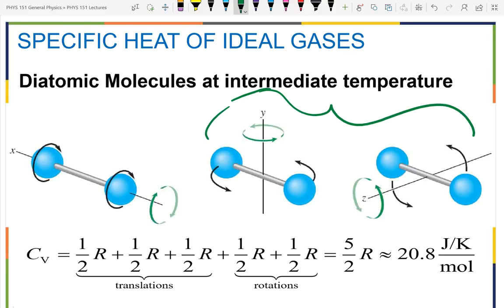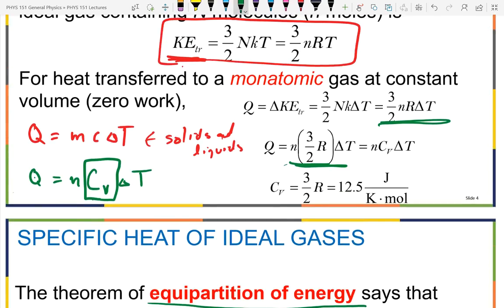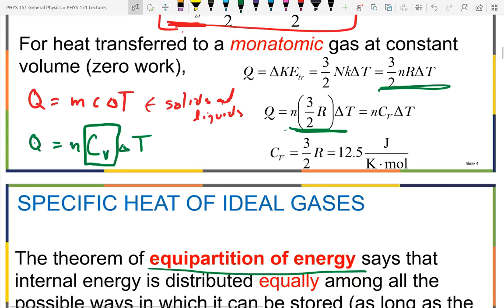Adding up the total degrees of freedom — three translational plus two rotational — gives five degrees of freedom. Hence the total energy for a diatomic molecule at room temperature is five-halves nRT, and the molar specific heat at constant volume is CV equals five-halves R.